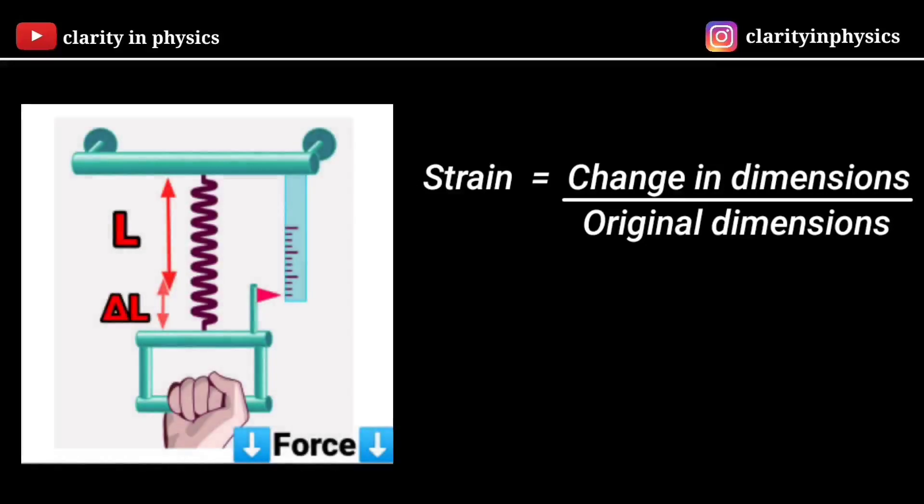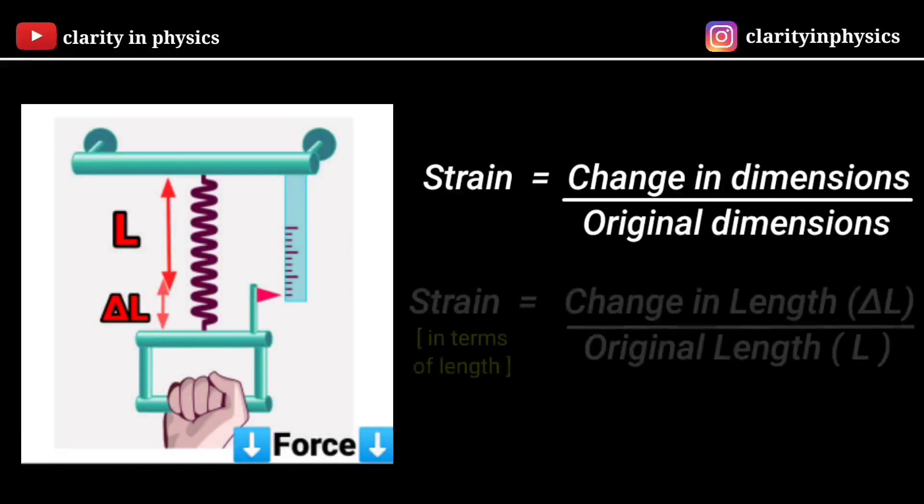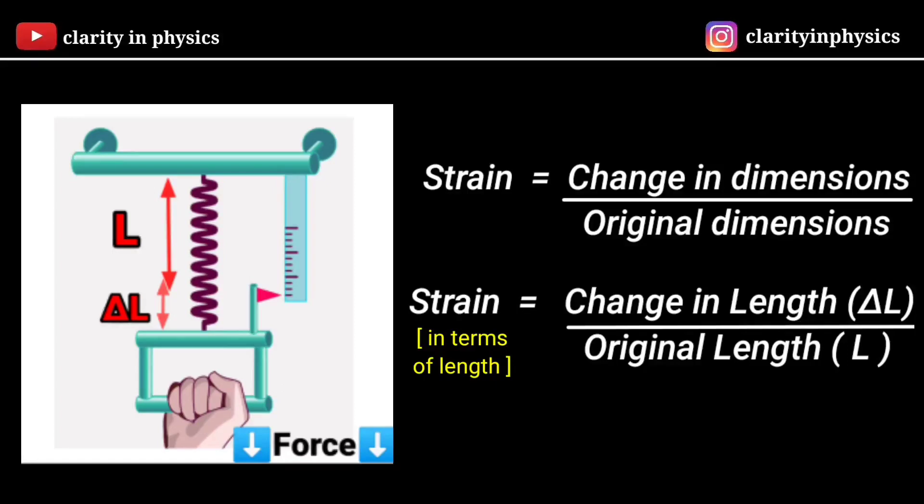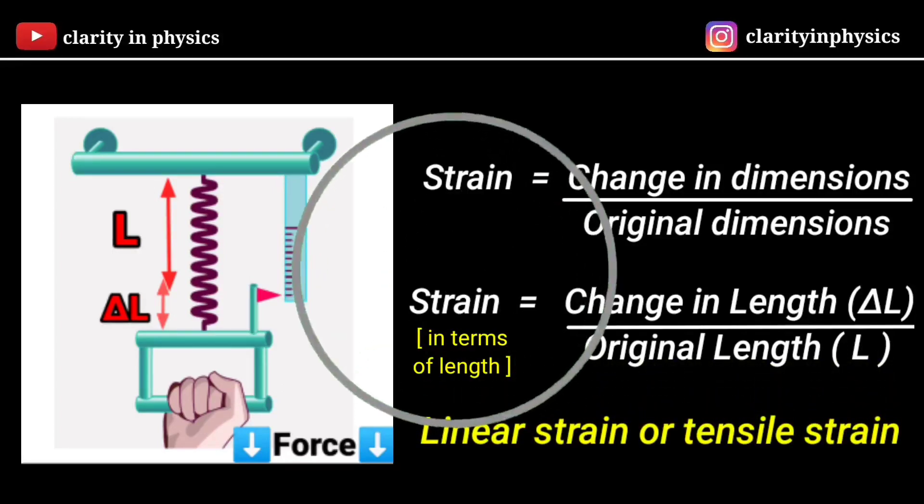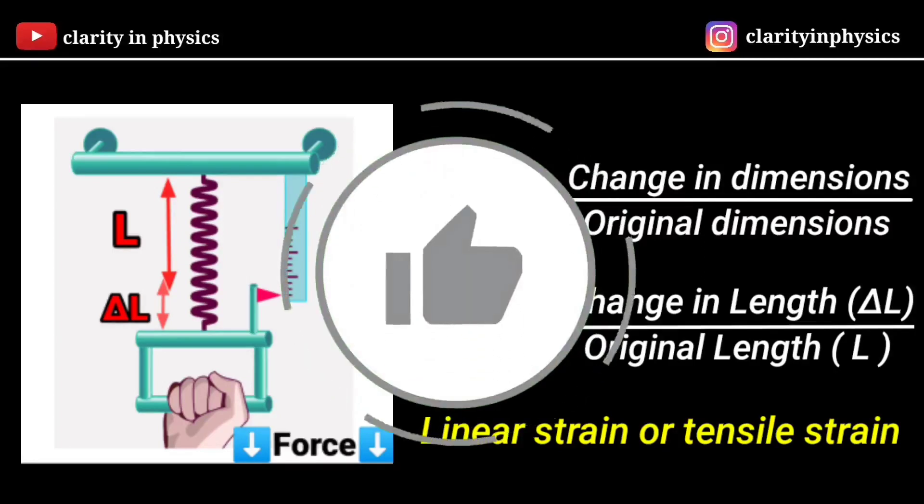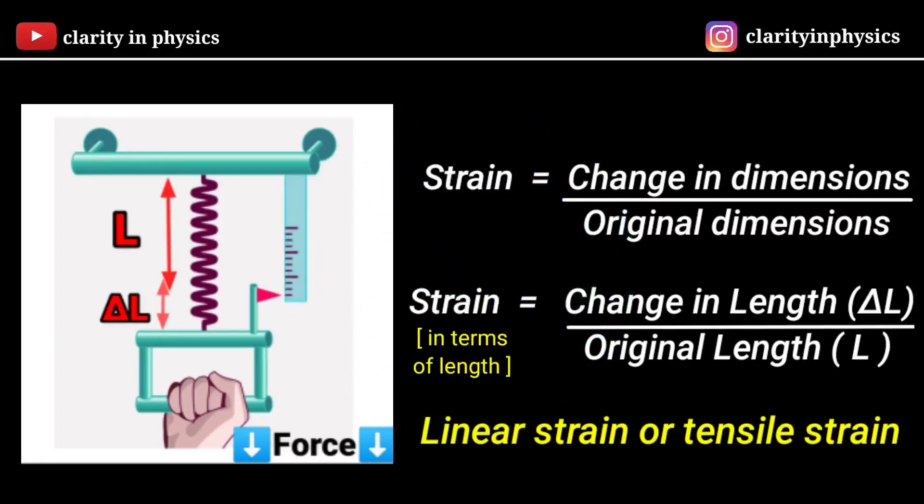Here strain is defined as the change in length to the original length and is called linear strain or tensile strain. As the deforming force produces a change in the length alone, the strain produced in the body is called linear strain or tensile strain.